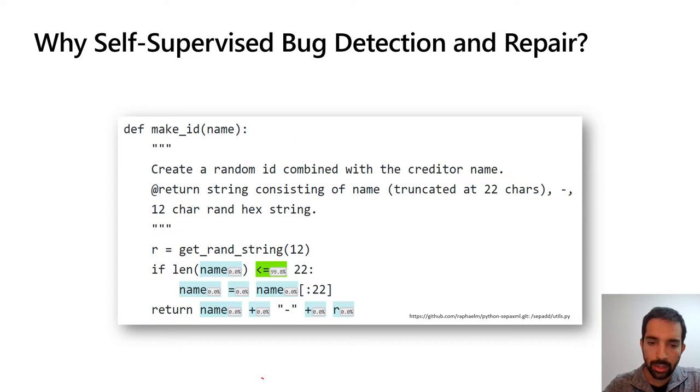For example, changing the concatenation operator here, let's say from a plus to a minus, will introduce an obvious bug that most machine learning models will be able to detect.